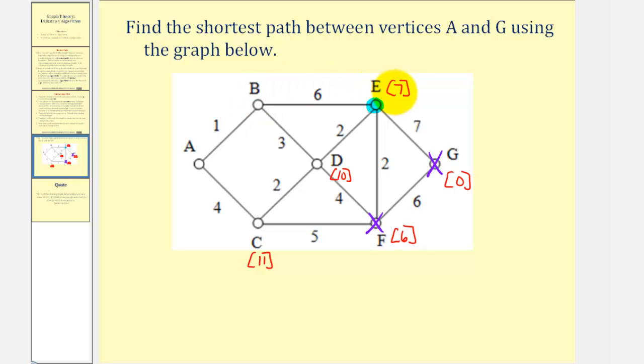First looking at vertex B, notice seven plus six is thirteen, so we label vertex B with thirteen, meaning it's thirteen units from the end. Now looking at vertex D, notice how seven plus two would be nine, which is less than ten, so we replace ten with nine, meaning if we take this path, D is only nine units from the end. We mark E as visited.